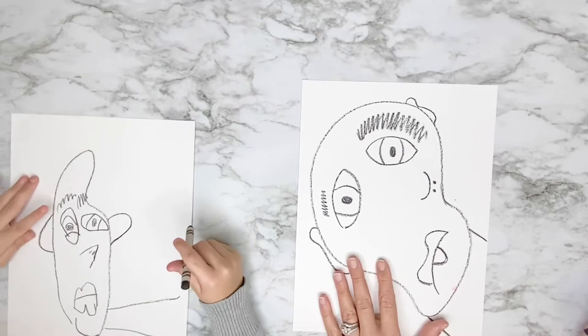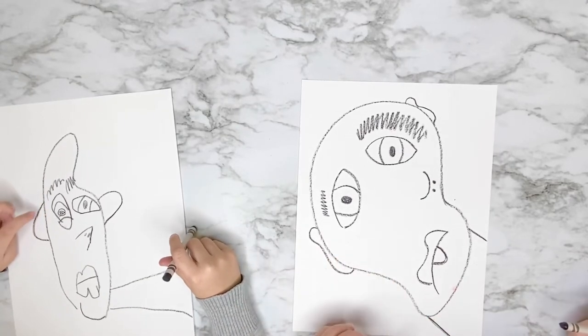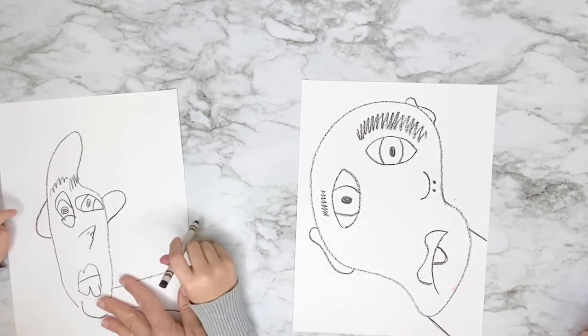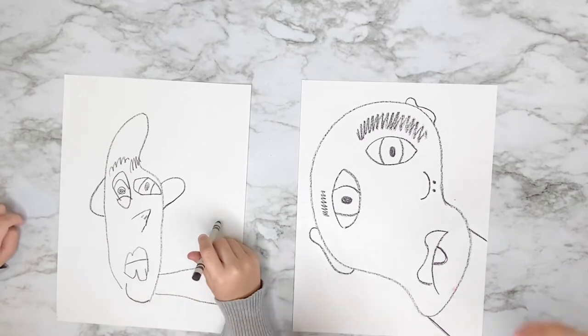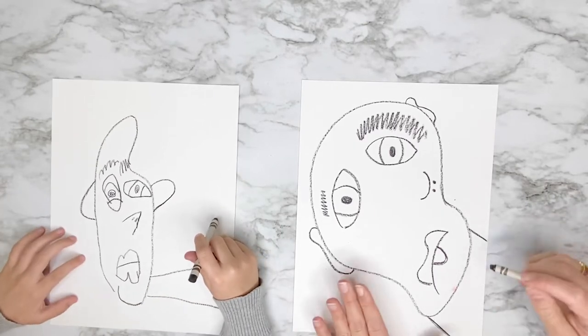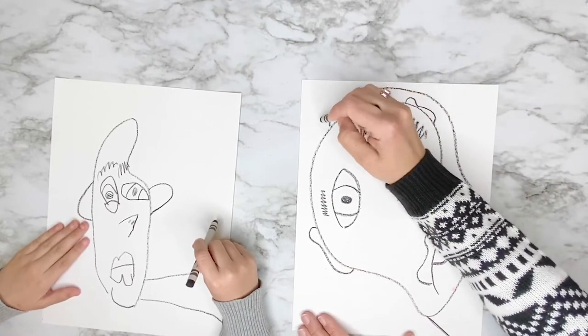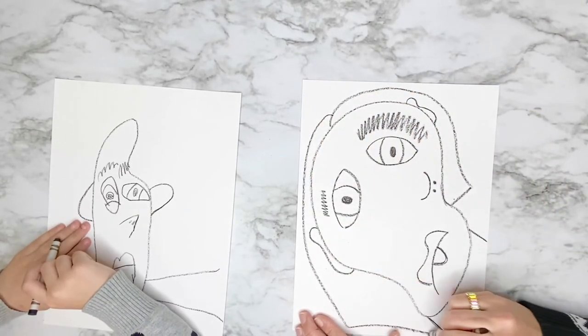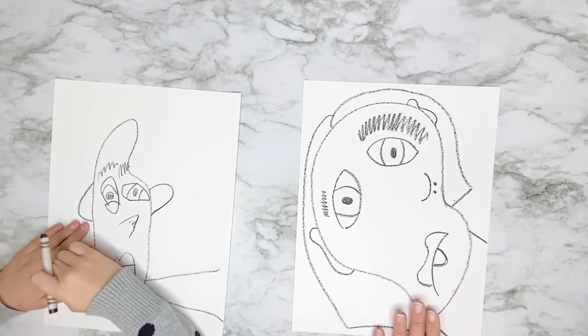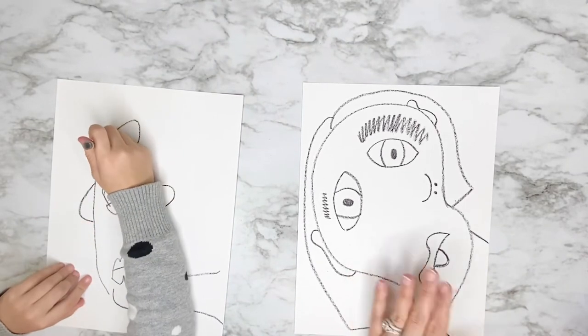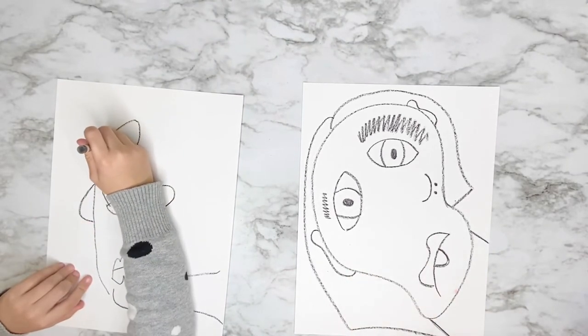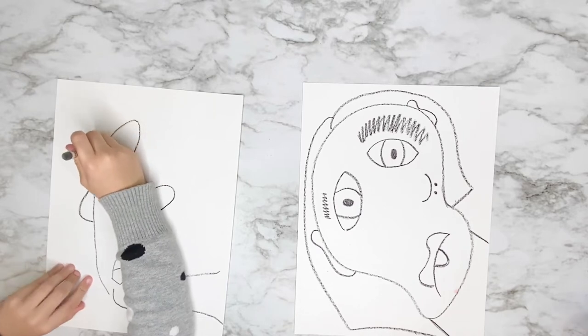And then the last thing we need to do is include hair and the hair can be any kind of hair you want. This does not need to look realistic. So one side can be super short, one side can be really long. And then when you're done with one side, you want to flip it over and give your other person a funny hairdo too.